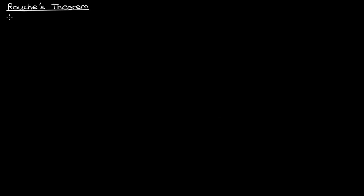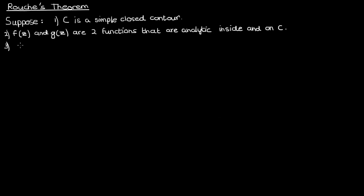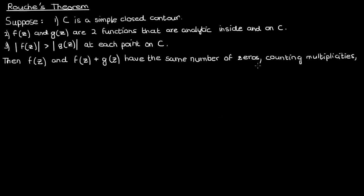The statement of Rouché's theorem goes something like this. Suppose C is a simple closed contour on the complex plane. Suppose also that I have two complex functions f and g that are both analytic inside C and on C, so f and g don't have any poles. In addition, suppose that the modulus of f is greater than the modulus of g at each point on the curve C. If these conditions hold, then f and f plus g have the same number of zeros counting multiplicities inside the closed contour C.